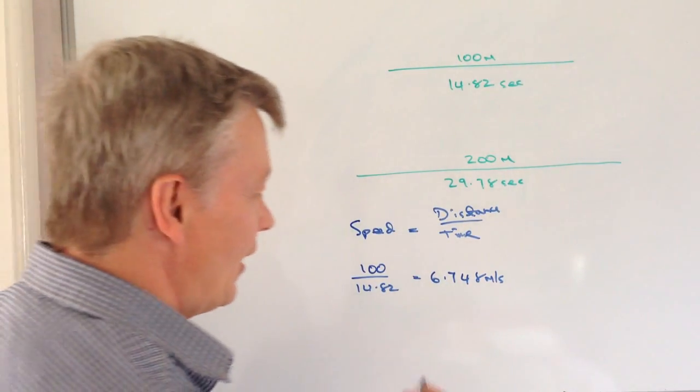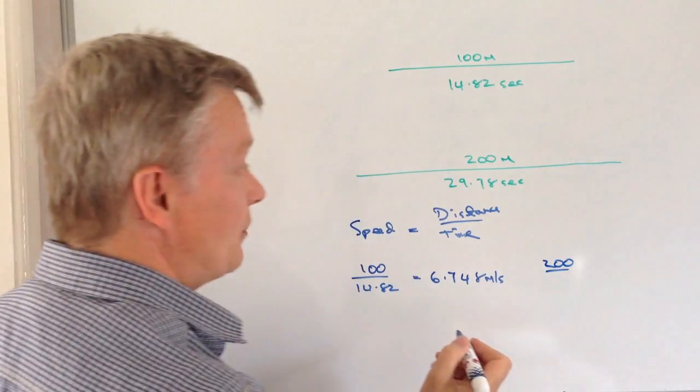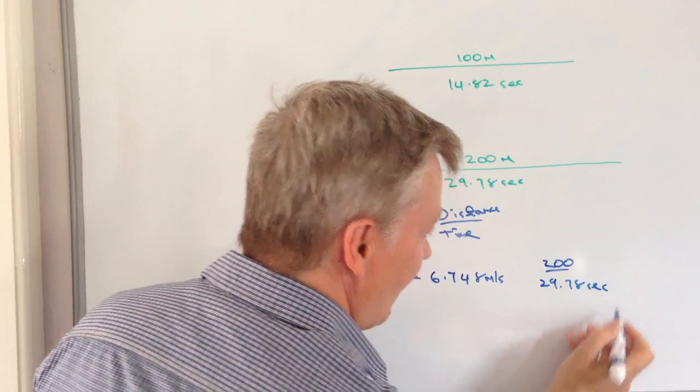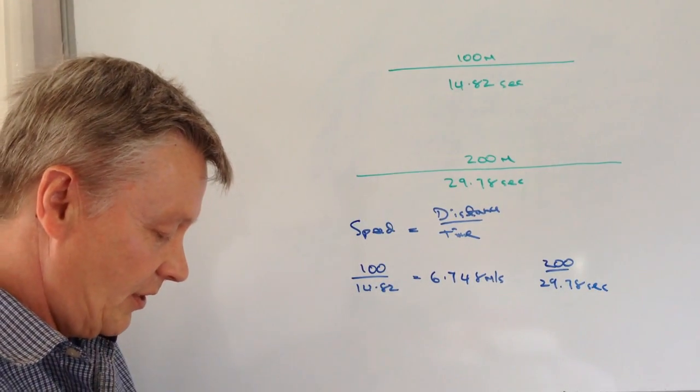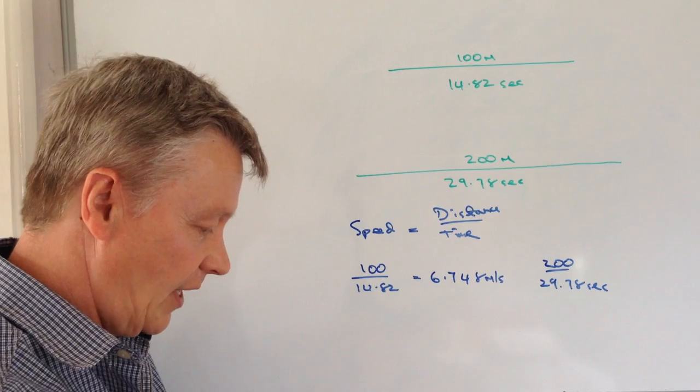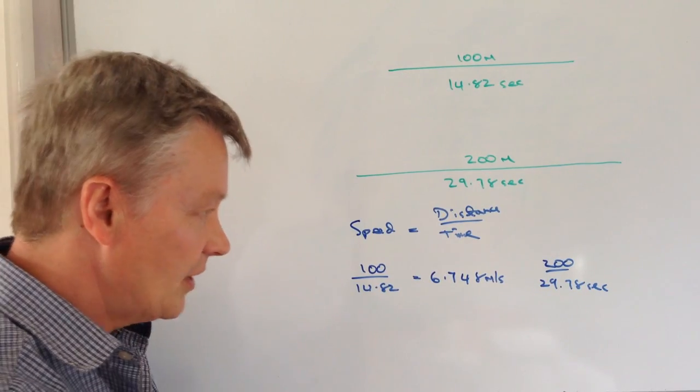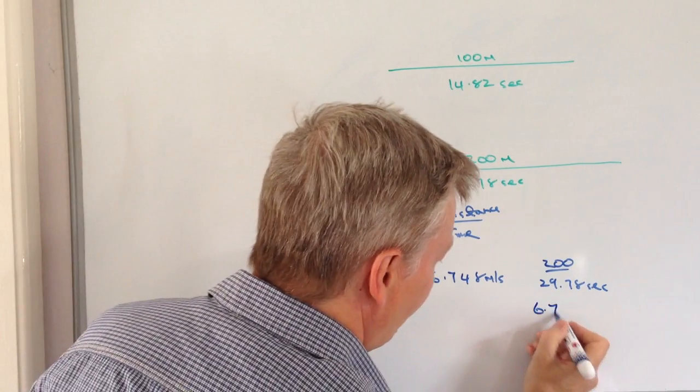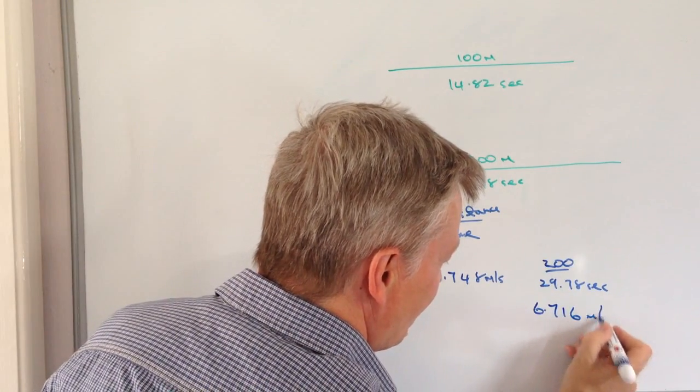For the second race, it's going to be 200 divided by 29.78 seconds. And that's going to give us 200 divided... oh it's a close one, 6.716 metres per second.